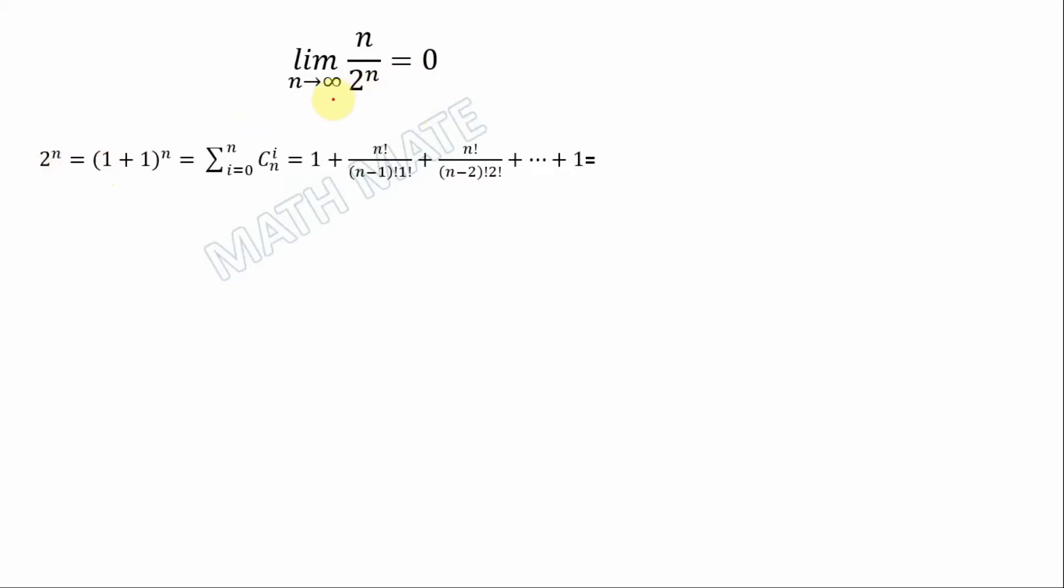So the bottom denominator, 2 to the power of n, we can express as 1 plus 1 to the power of n. And in the next step we can use the binomial theorem, so let's plug in our sum to this formula.